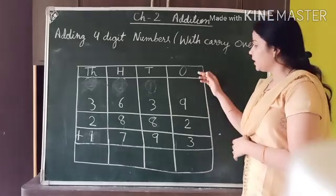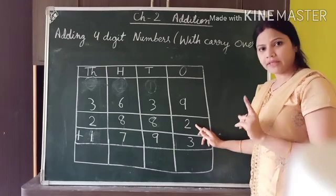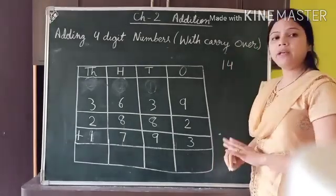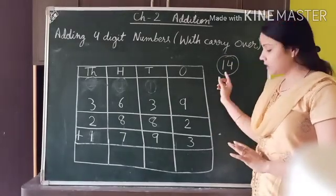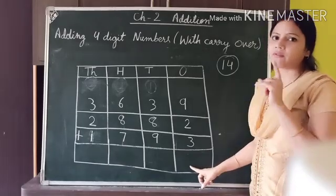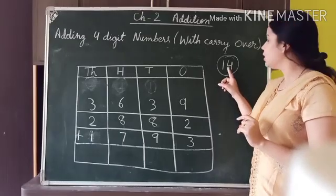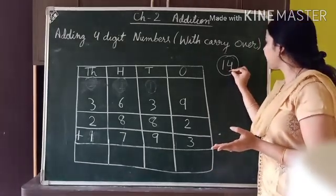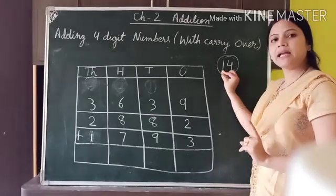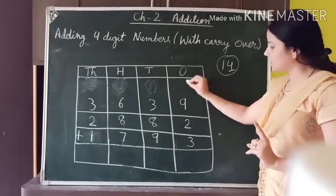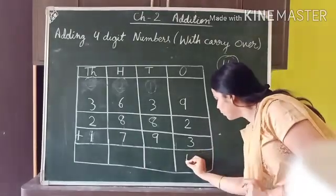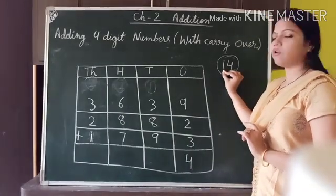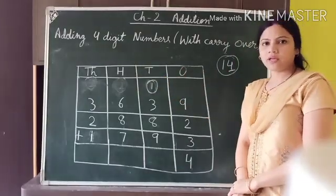Starting with the ones position: nine plus two is eleven, eleven plus three is fourteen. In the number 14, four is placed at the ones position and one is placed at the tens position. So we write 4 at the ones place and carry forward 1 to the tens place.